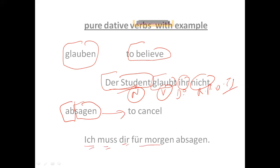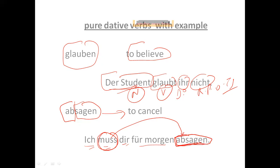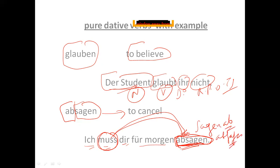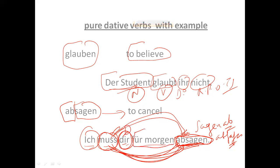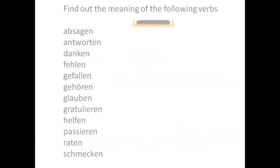Next is 'absagen,' meaning 'to cancel' — it is a separable verb. For example: 'Ich muss dir für morgen absagen' — I must cancel the plan for tomorrow. 'Muss' is a modal verb, so the second verb goes to the end in its infinitive form. Although 'absagen' is separable, because a modal verb is present, it stays as 'absagen' at the end. 'Ich' is nominative, 'dir' is dative, and 'für morgen' is the remaining part.